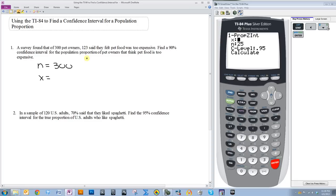Now, X is the amount of people, in this case, that responded positively to thinking that pet food was too expensive. So, 123 said yes. Pet food is too expensive. So, X is 123.